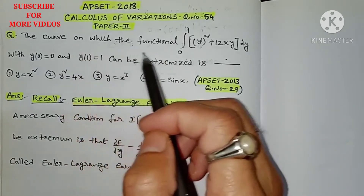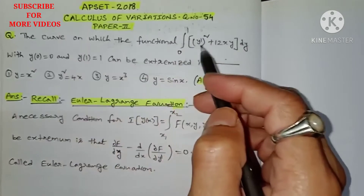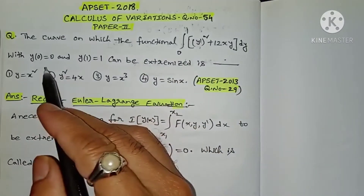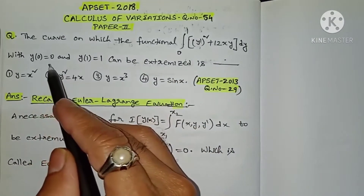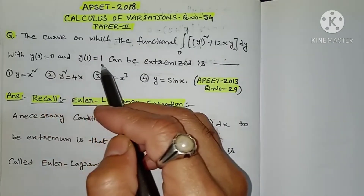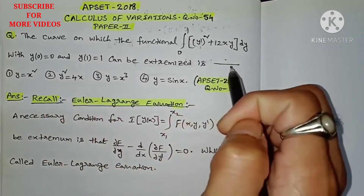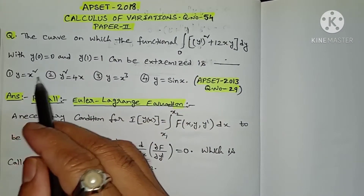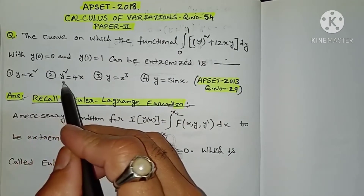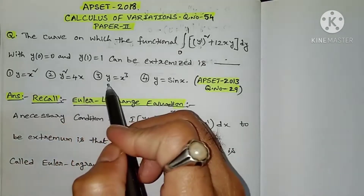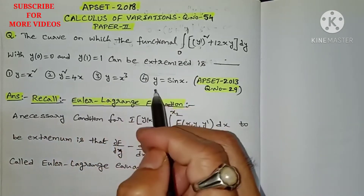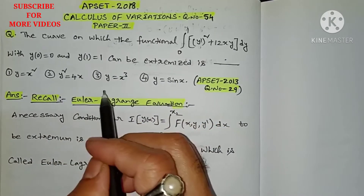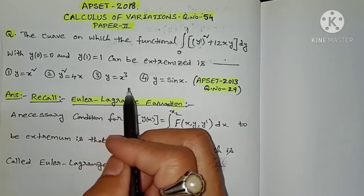We will see the question. The curve on which the functional integral from 0 to 1 of (y'² + 12xy) dy, with initial conditions y(0) = 0 and y(1) = 1, can be extremized is: option 1: y = x²; option 2: y² = 4x; option 3: y = x³; option 4: y = sin x. We have to choose one correct option.